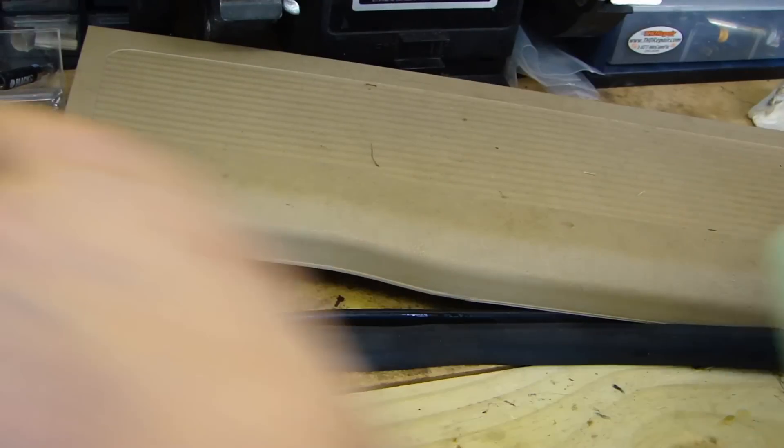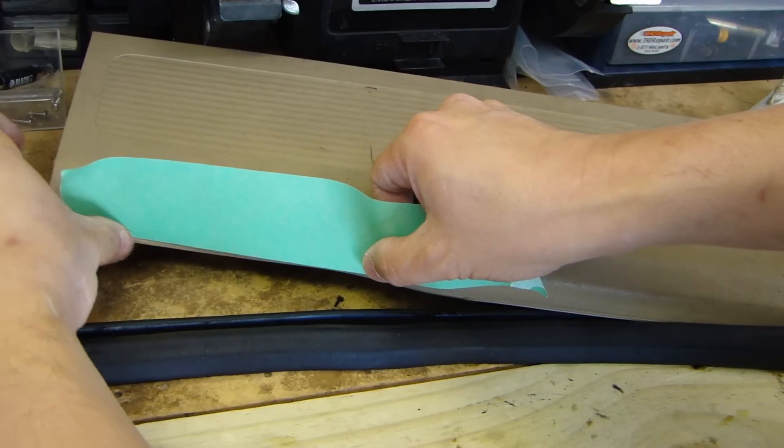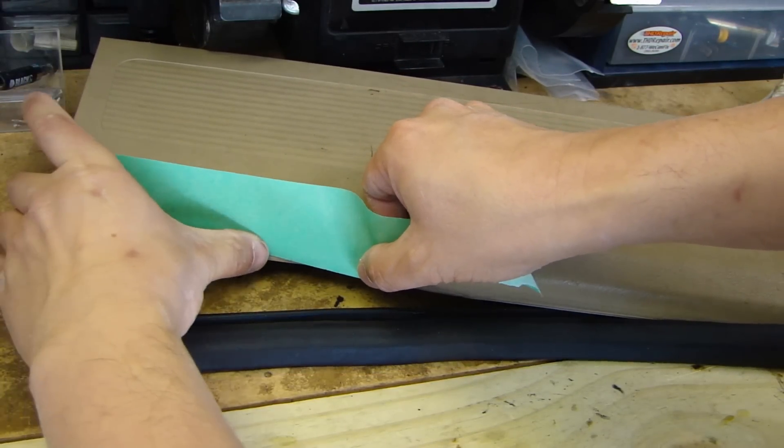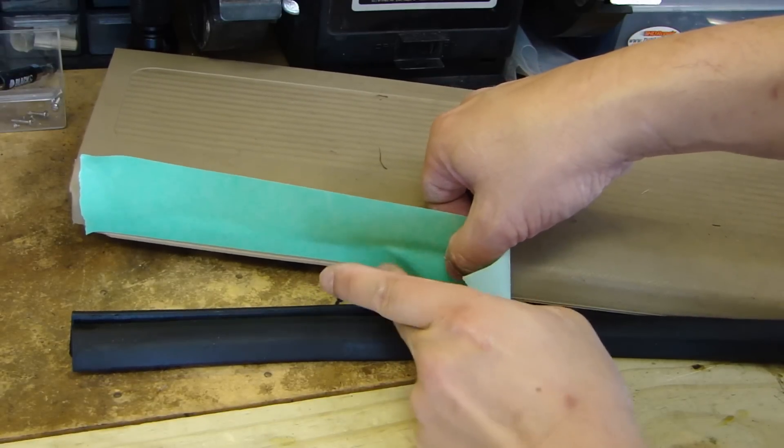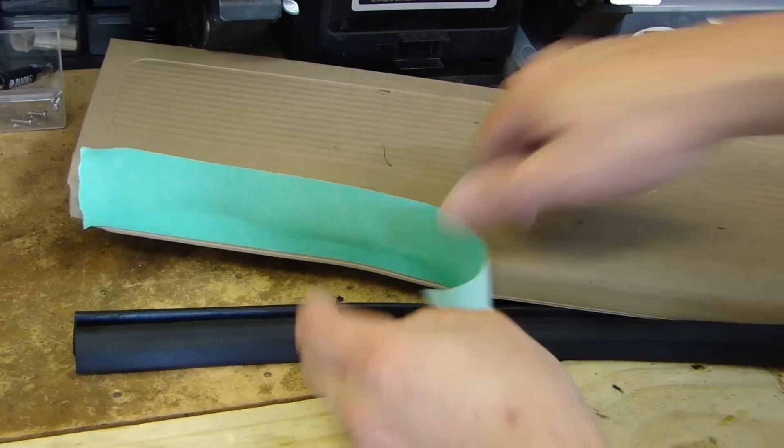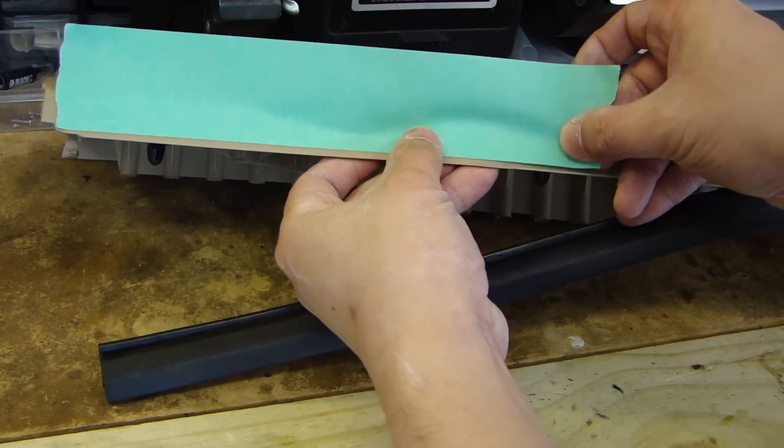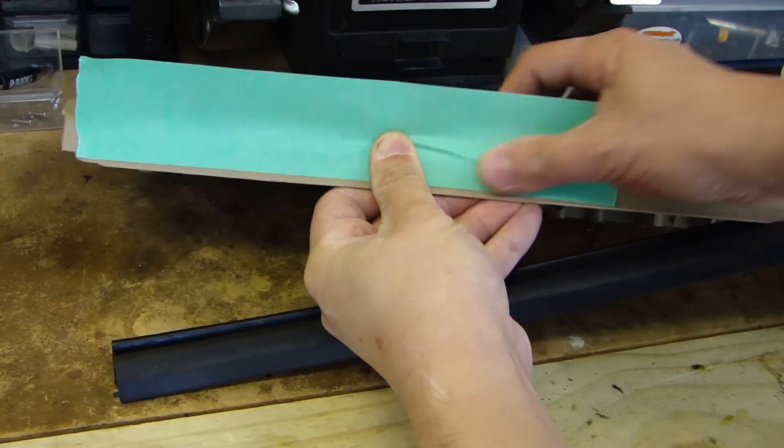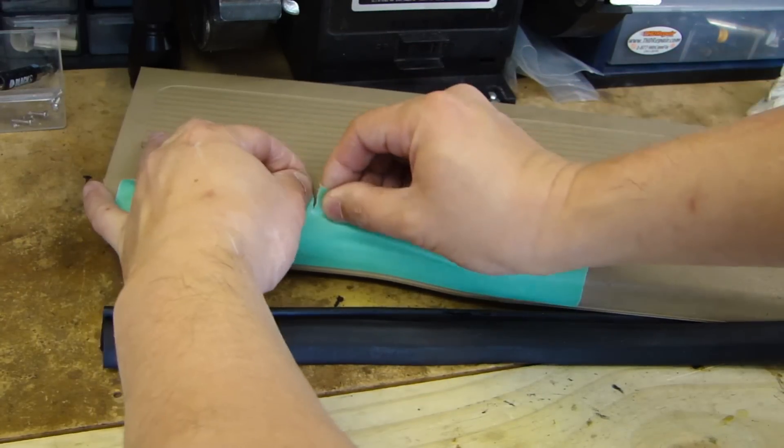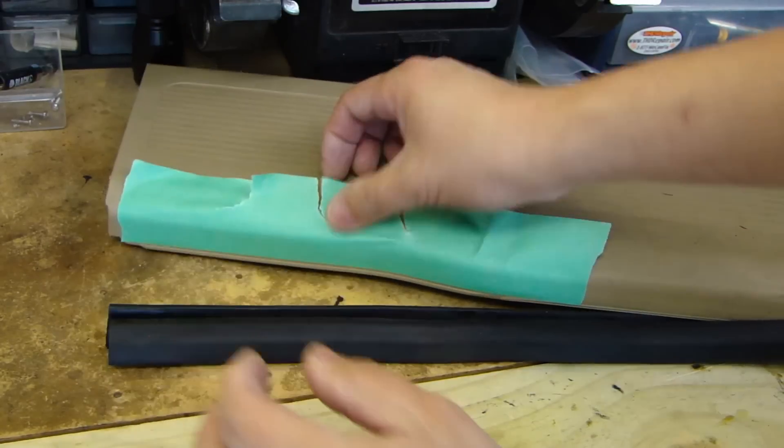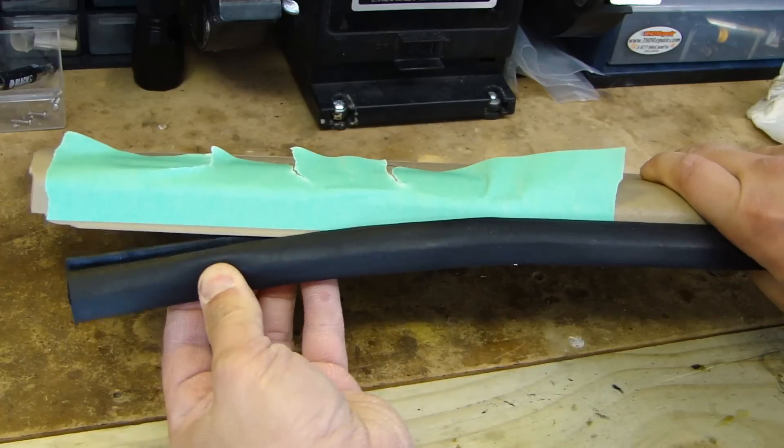Then get yourself the painter's tape, and what you want to do is put the tape right up to the bottom edge like so. Now install the rubber molding back in here.